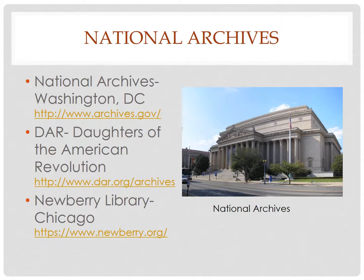The National Archives in Washington, DC is something that most people are aware of as having records. Their website is not particularly intuitive or easy to use, but they do have a website where you can look for military records and all sorts of documents. The Daughters of the American Revolution is also a National Archive. The Newbury Library of Chicago is part of the archives system. And there are some regional archives associated with the National Archives — for example, Dayton, Ohio has one that's a regional repository.